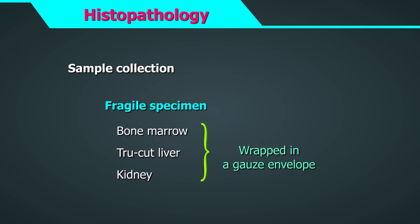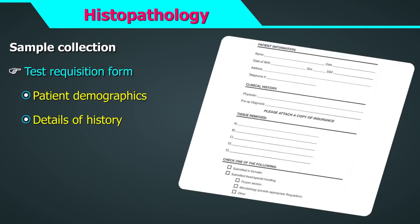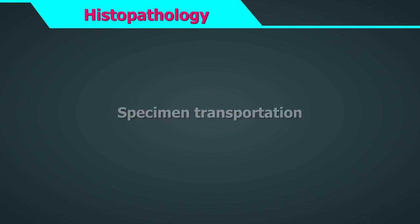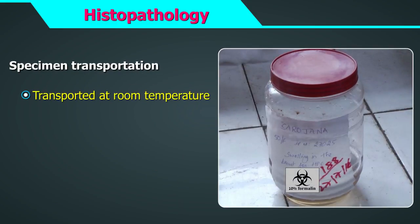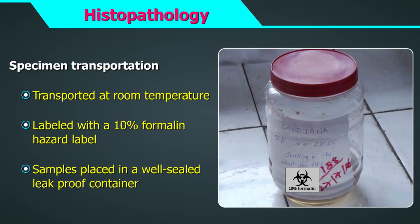Small fragile specimens such as bone marrow or true cut liver or kidney specimens can be wrapped in a gauze envelope so that they do not disintegrate during transport. A test requisition form for cytopathology and histopathology must capture details of patient demographics, patient history, anatomic sites of biopsies, number of containers sent, and specimen transportation instructions. Samples may be transported at room temperature and must be labelled with a 10% formalin hazard label. All samples should be placed in a well-sealed leak-proof container.